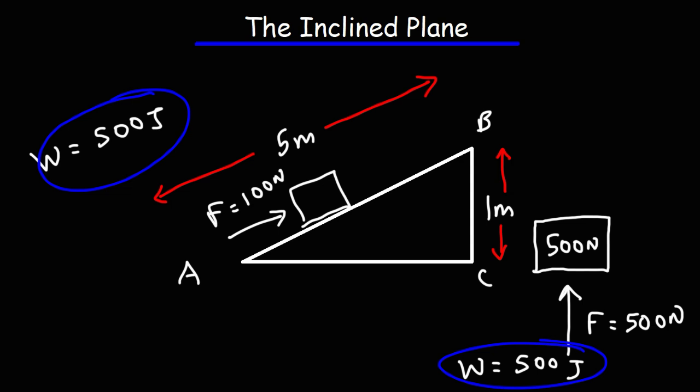Now another thing we need to talk about is something called mechanical advantage. The mechanical advantage basically tells us the amount of force, or rather the ratio of the two forces that the machine really assists us with. So it requires 500 Newtons of force to go from C to B, but we're only using 100 Newtons of force to go from A to B.